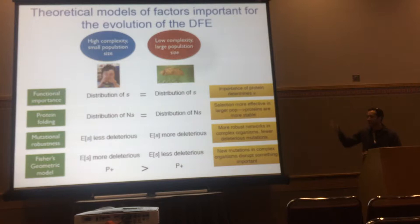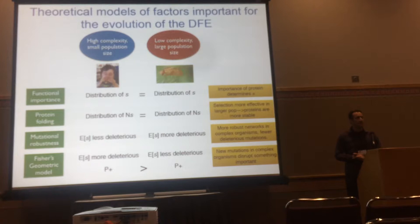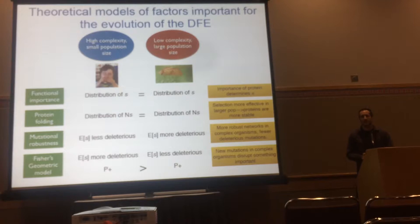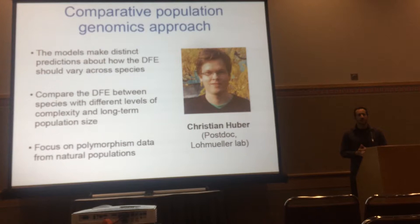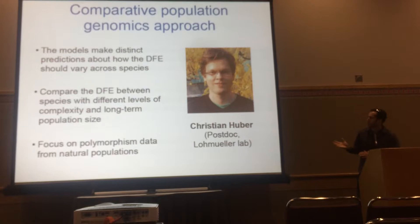All of these models have some theoretical basis and experimental support in different systems, but there hasn't been a systematic comparison of these models against each other, considering genetic variation data from natural populations across a phylogenetically diverse set of taxa. Importantly, all these models make different predictions about how the distribution of fitness effects ought to vary across different species. This is the work that we did.